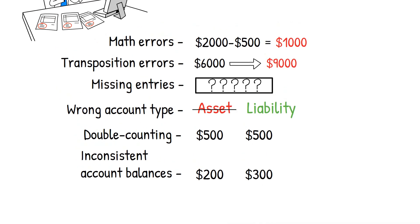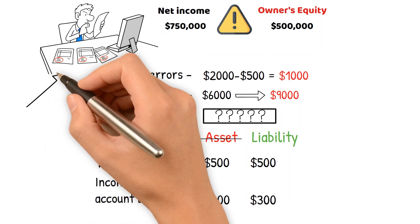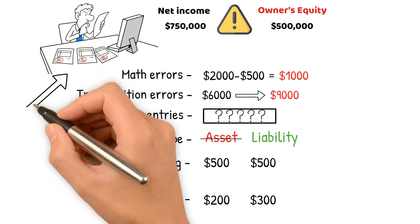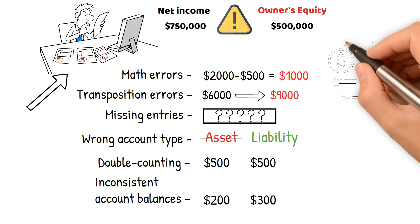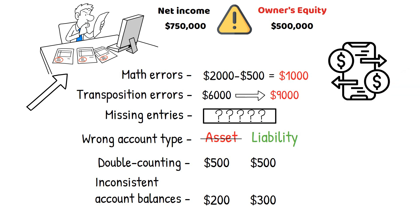The accountant must carefully review the worksheet and compare the balances in each column to find and correct the error. They may also need to review the trial balance and general ledger accounts to ensure that all transactions have been appropriately recorded.